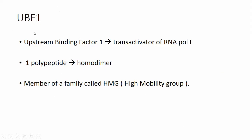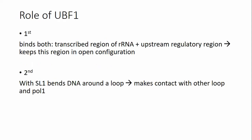UBF1 can be described as a trans-activator of RNA Polymerase I. It is a single polypeptide or a homodimer, and it belongs to the HMG, high mobility group, family. UBF1 binds along nearly the whole rRNA gene region, including the region to be transcribed and the upstream regulatory regions, maintaining that region in an open configuration.